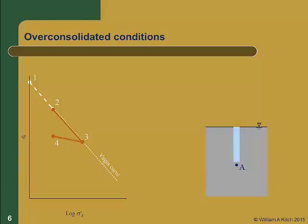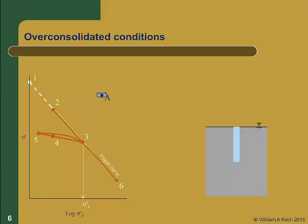We now come to the site, drill a boring, and take a sample out of the ground. In the process of taking the sample out we again unload the sample, this time from point 4 to point 5 along the rebound curve. We then put the sample in our consolidometer and perform a laboratory test where we reload it. The soil loads along the recompression curve from point 5 to point 3, and then along the virgin curve from point 3 to point 6, from which we determine the pre-consolidation stress sigma prime c.